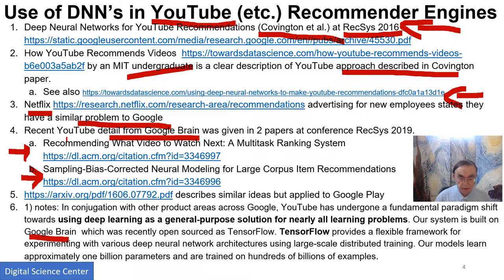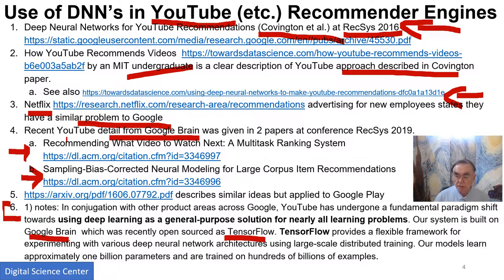Google Brain — which was their software, actually not the team — was open source as TensorFlow. These two lines tell you what I've been saying for this course: deep learning has taken over almost everything, and we have to bear that in mind as we decide what to do and how to do it.